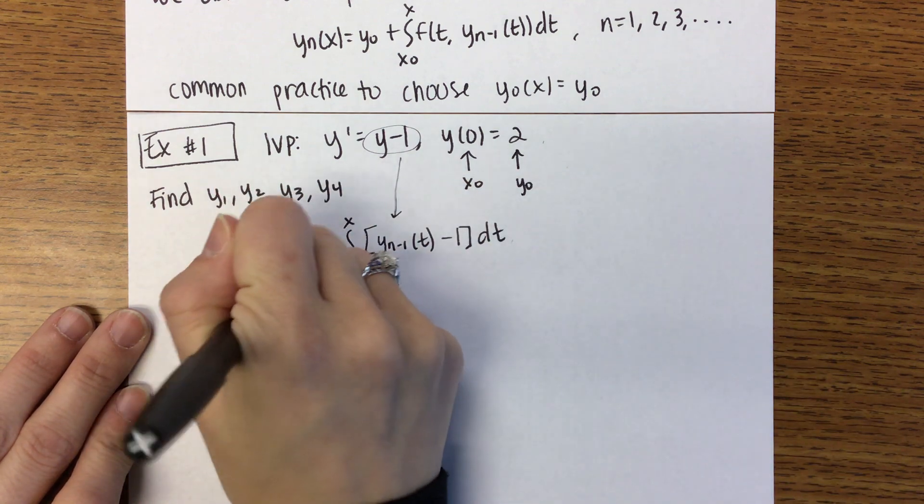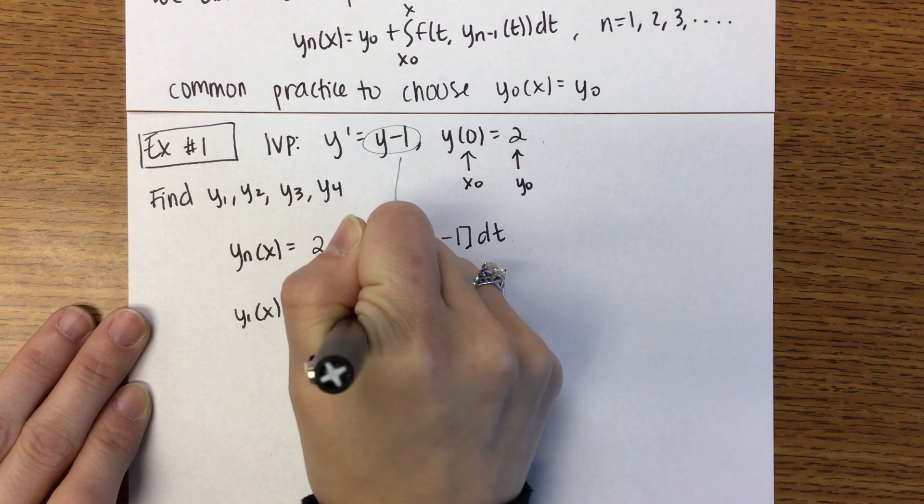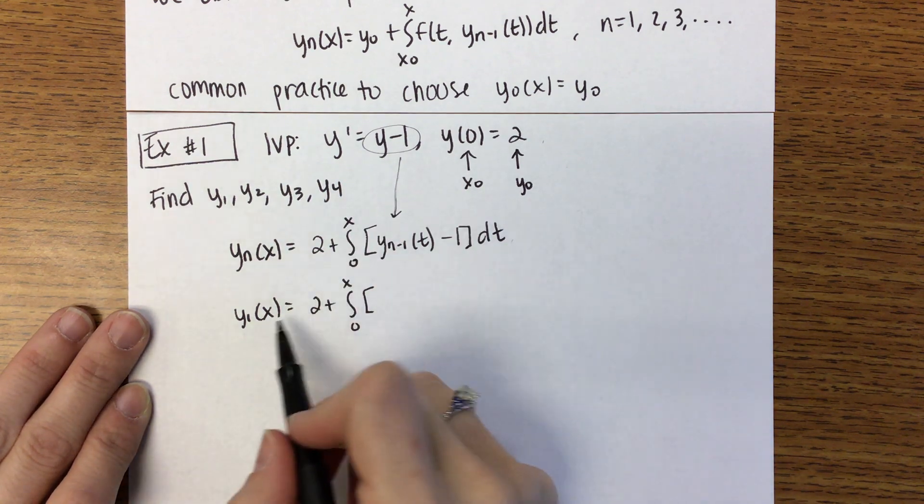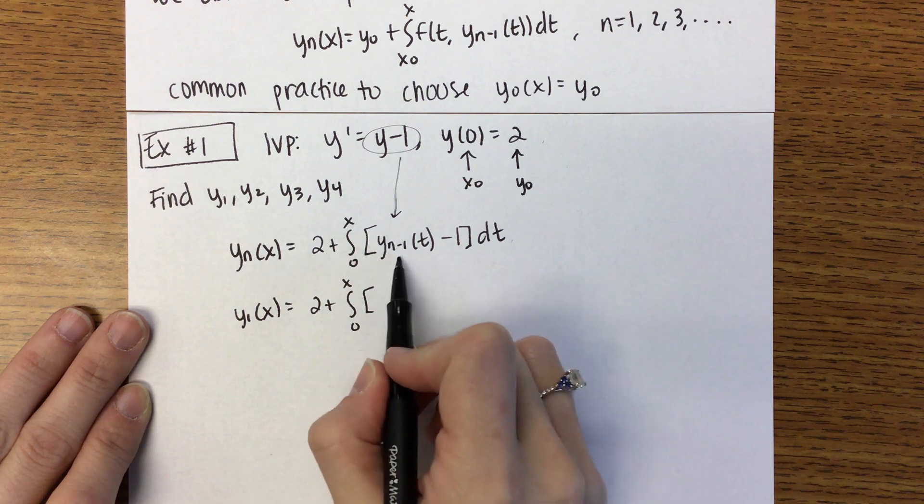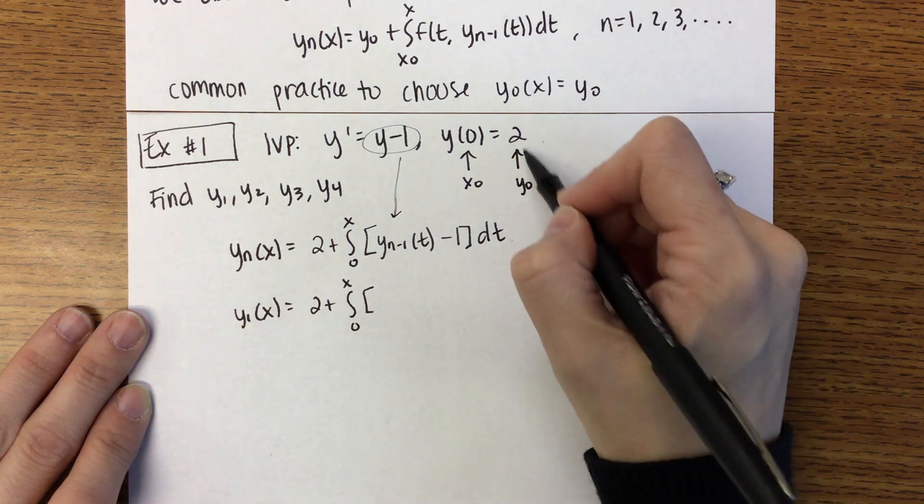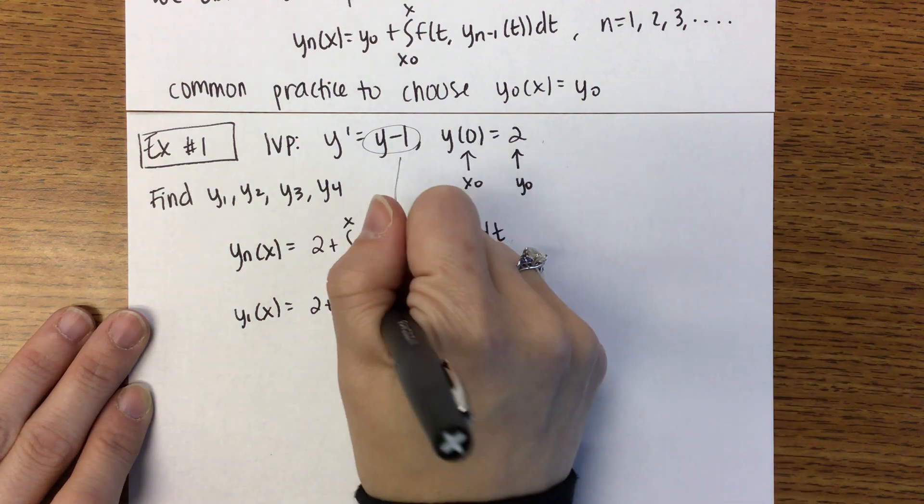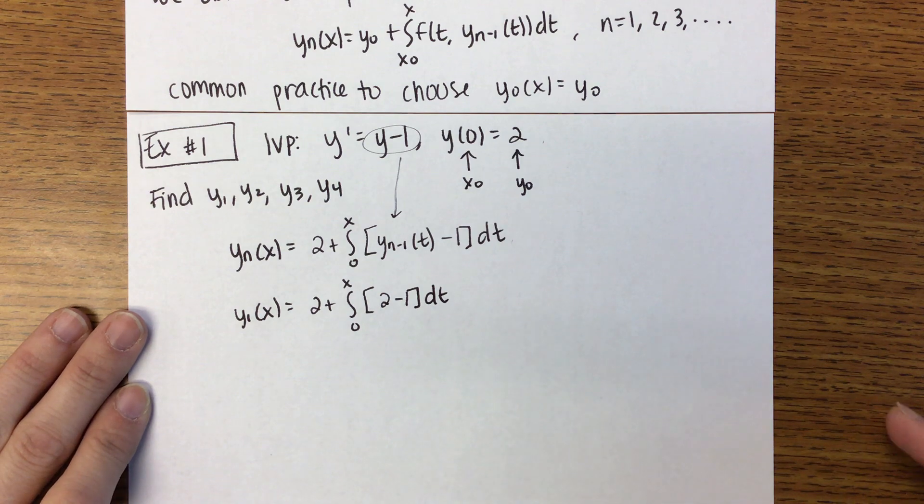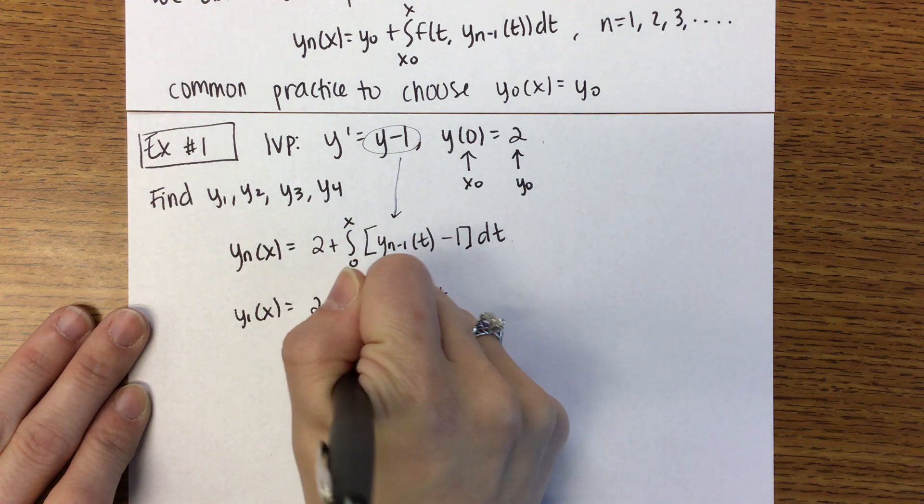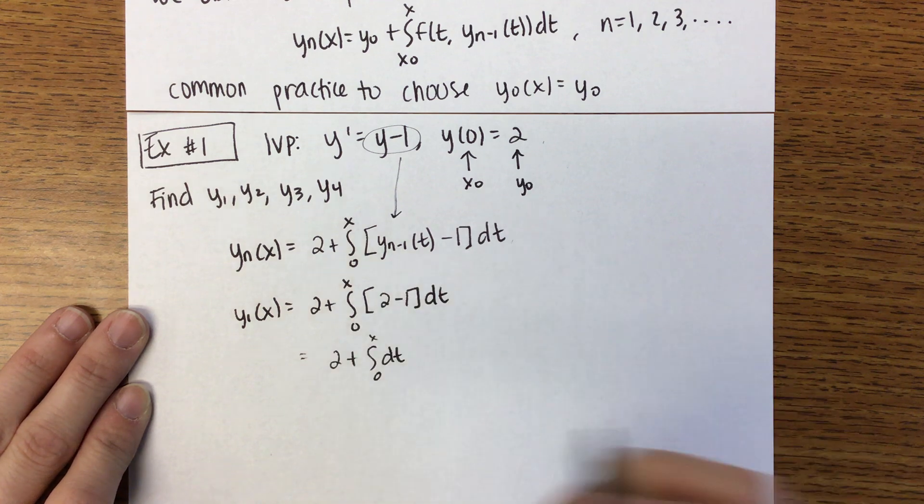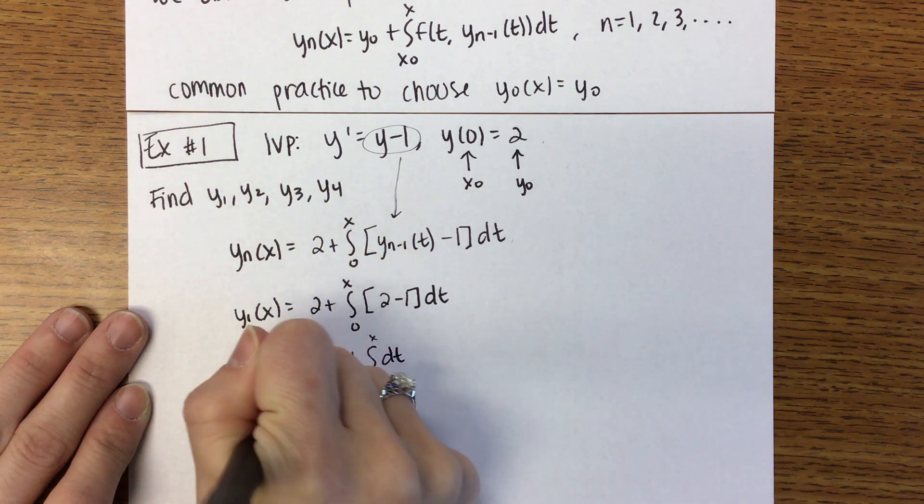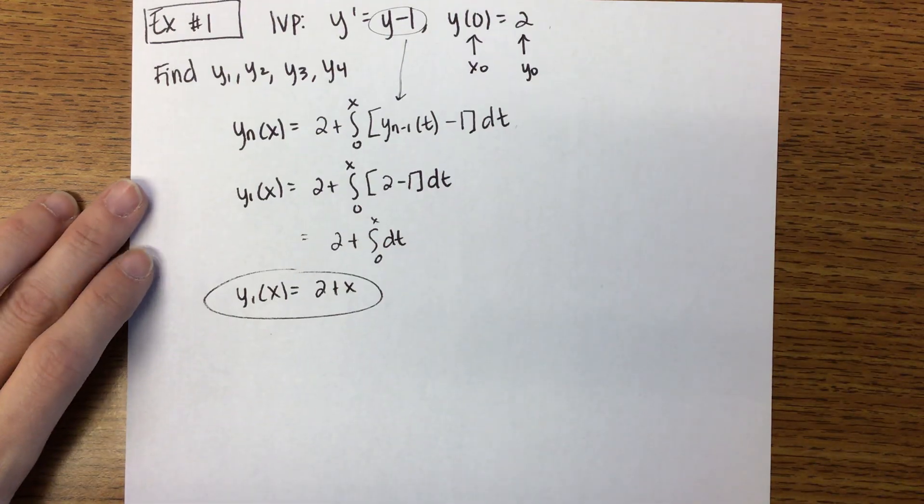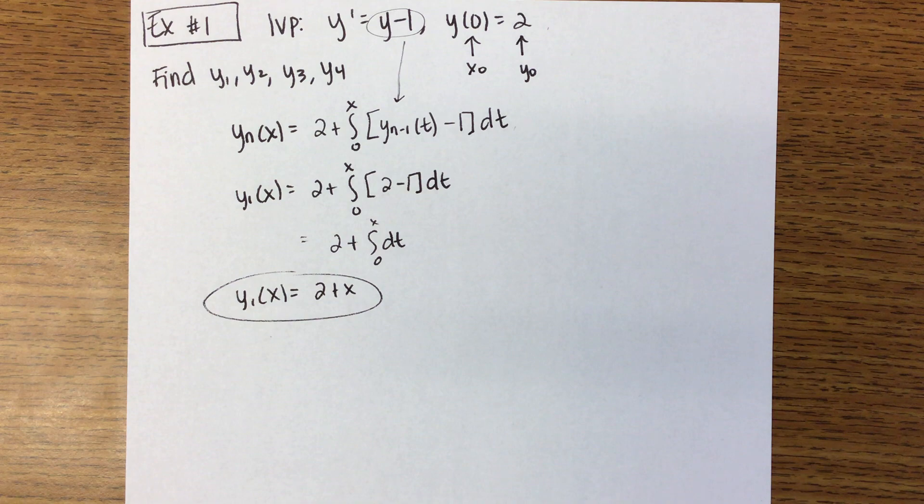So if I want Y1 of X, it'll be 2 plus 0 to X. If I plug a 1 in here, it's Y0 of T, which is what we start with, this 2. So we get 2 minus 1 DT. So this will be 2 plus 0 to X DT. So hopefully we can see that Y1 of X is going to be equal to 2 plus X. You guys follow me so far?